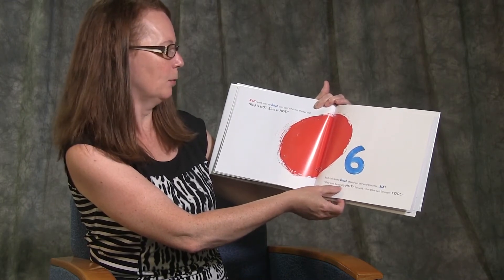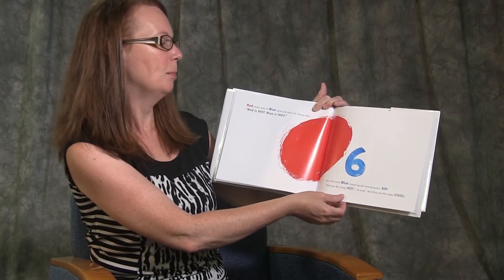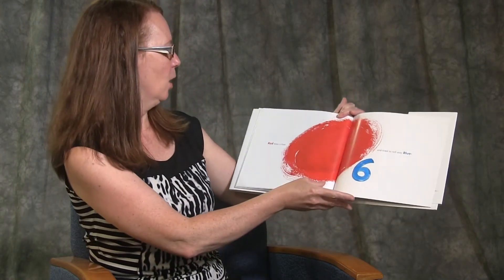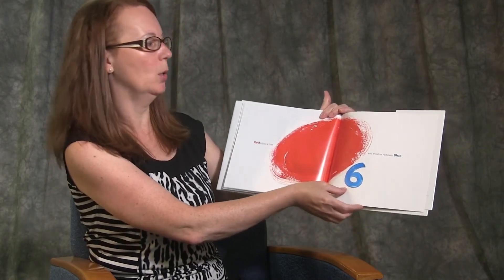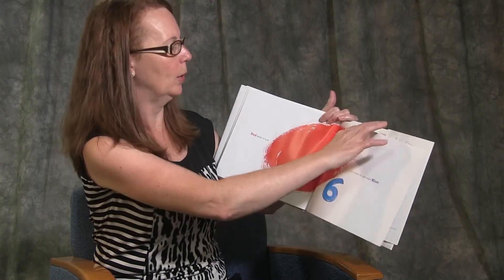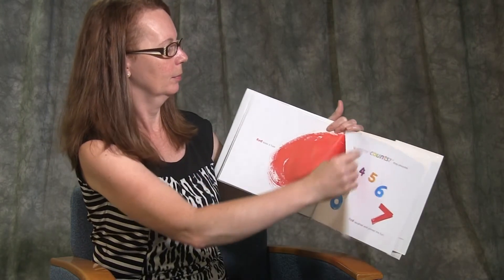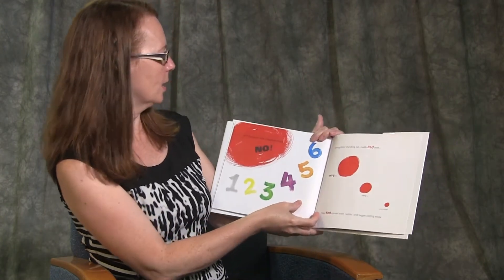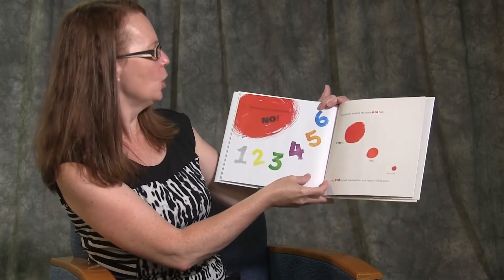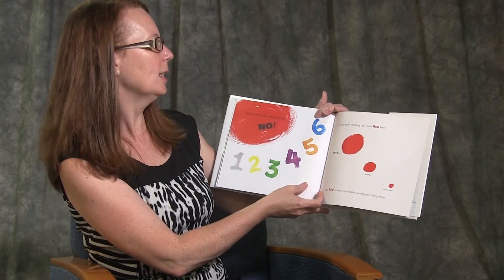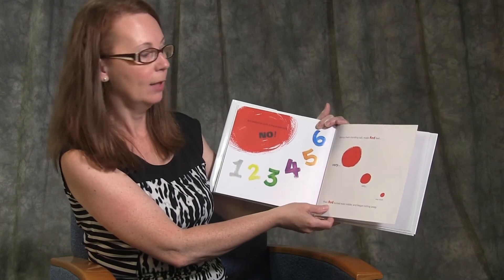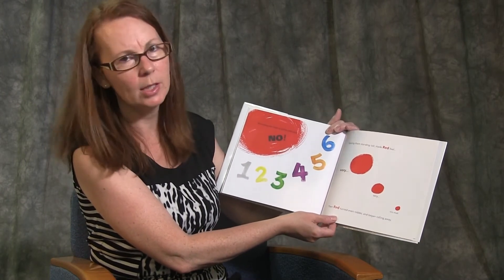Red can be really hot, he said, but blue is super cool. Red blew a fuse and tried to roll over blue. But everyone stood and said no. Seeing them standing tall made red feel very, very, very small.